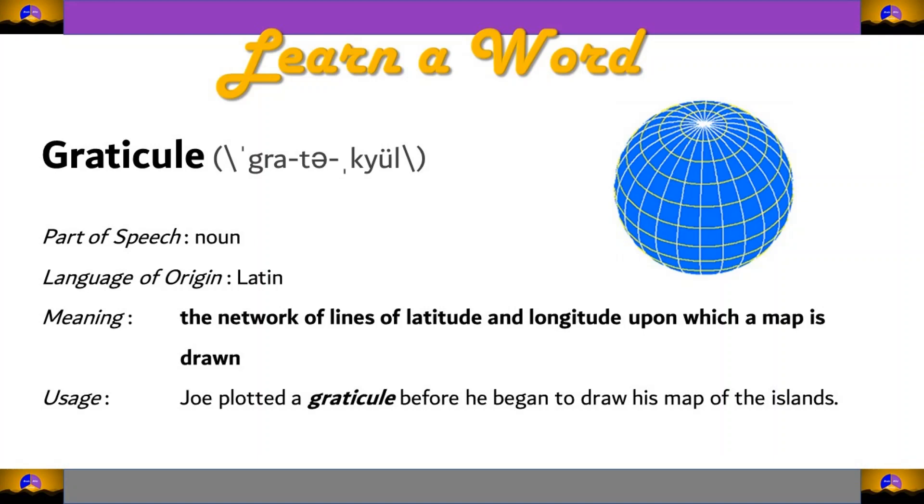The meaning of the word Graticule is the network of lines of latitude and longitude upon which a map is drawn.